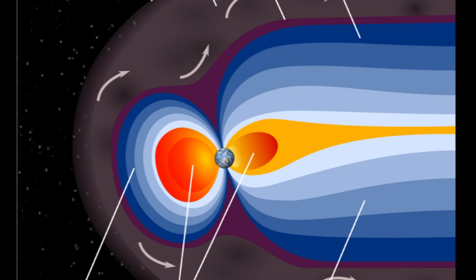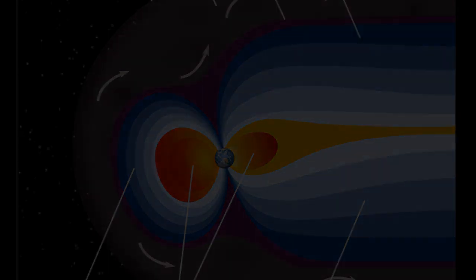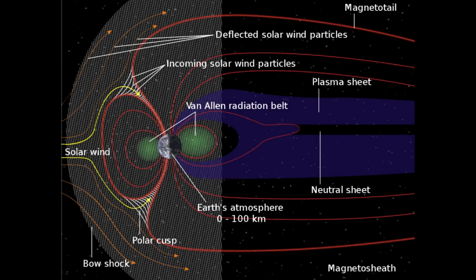Opposite the magnetotail is the magnetopause. The area on the day side of the planet where earth's magnetic field is compressed by solar wind. In the magnetopause, the field is compressed down to 40,000 miles. The shape and size of the magnetopause vary with solar intensity.